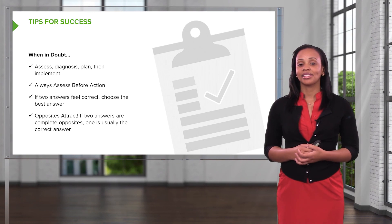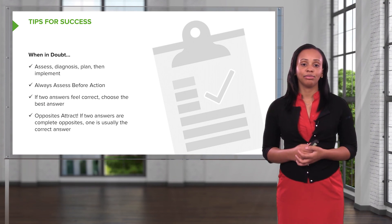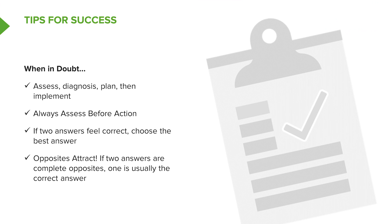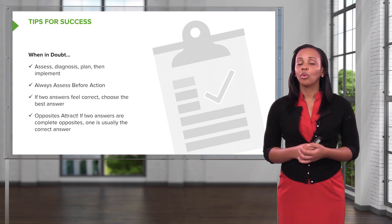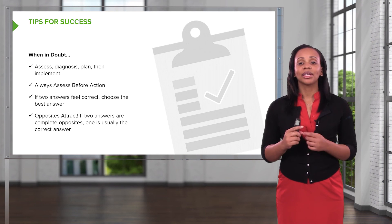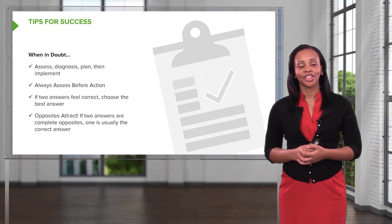Tips for success: when in doubt, always assess, diagnose, plan, and then implement. When given a question about what the nurse's priority is, always choose to assess before implementing or taking any action. If two answers feel correct — and they frequently will — do your best to pick the most correct answer. And remember, opposites attract: if two responses are worded fairly similar but have something opposite in them, the correct answer is usually one of those two. Good luck.